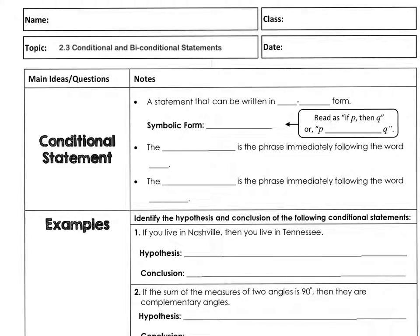In this video, we're going to talk about conditional and biconditional statements. A conditional statement is simply a statement that can be written in if-then form, and we use this symbol to represent it. We read it as 'if P then Q,' or 'P implies Q.'